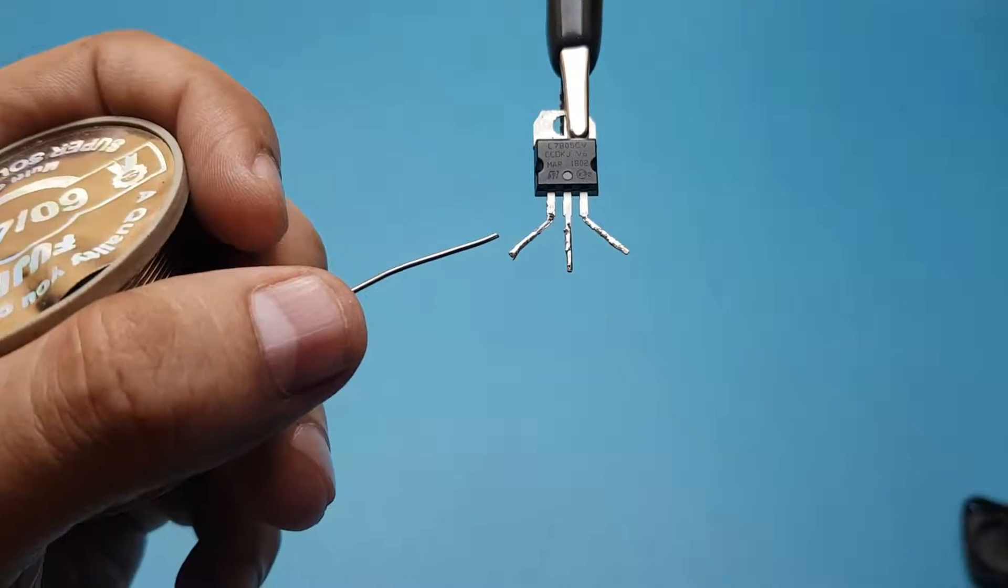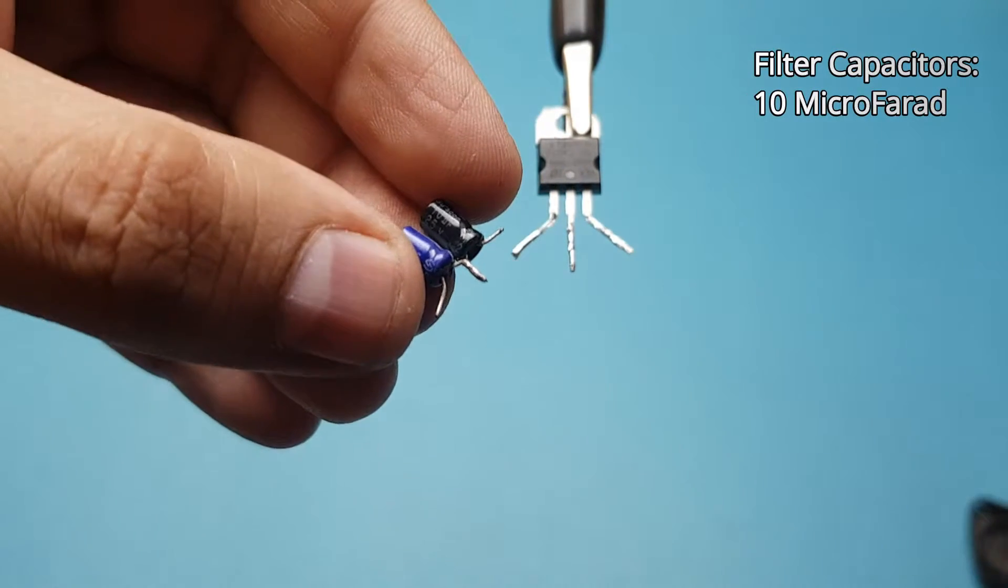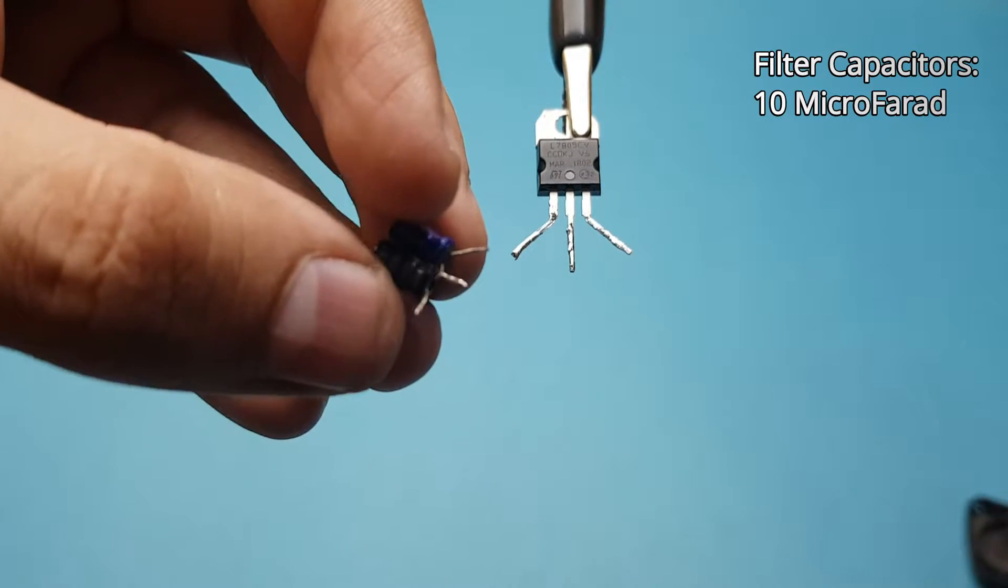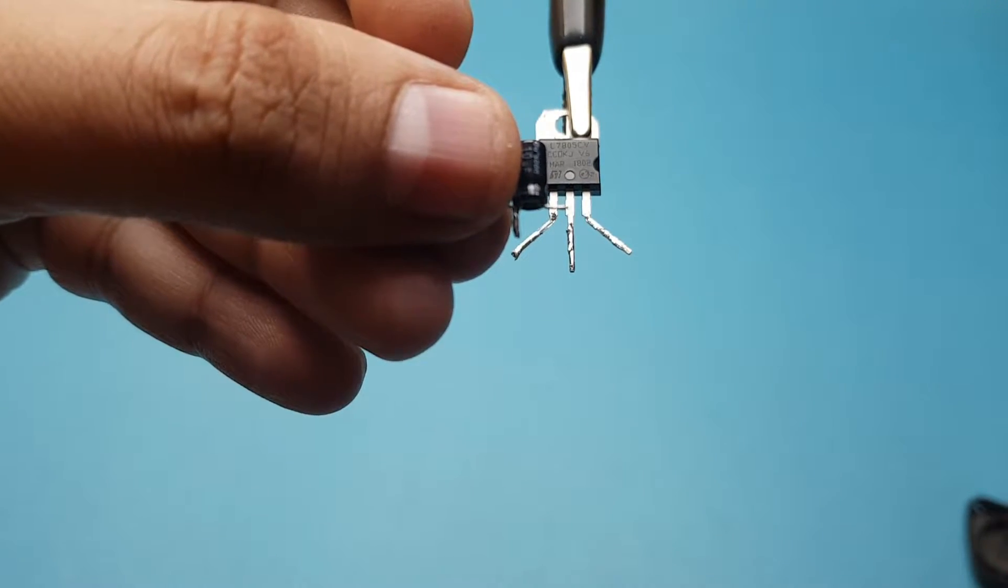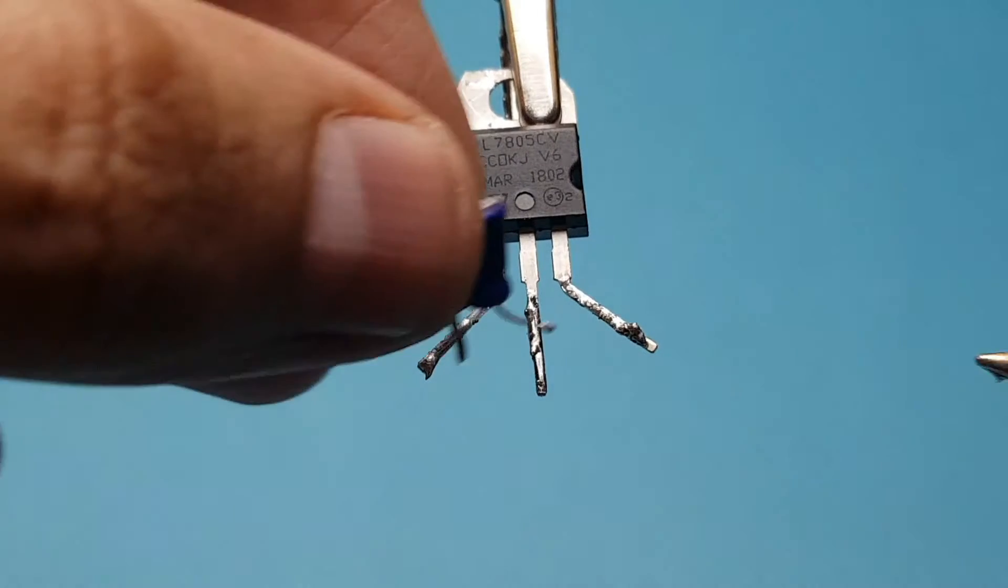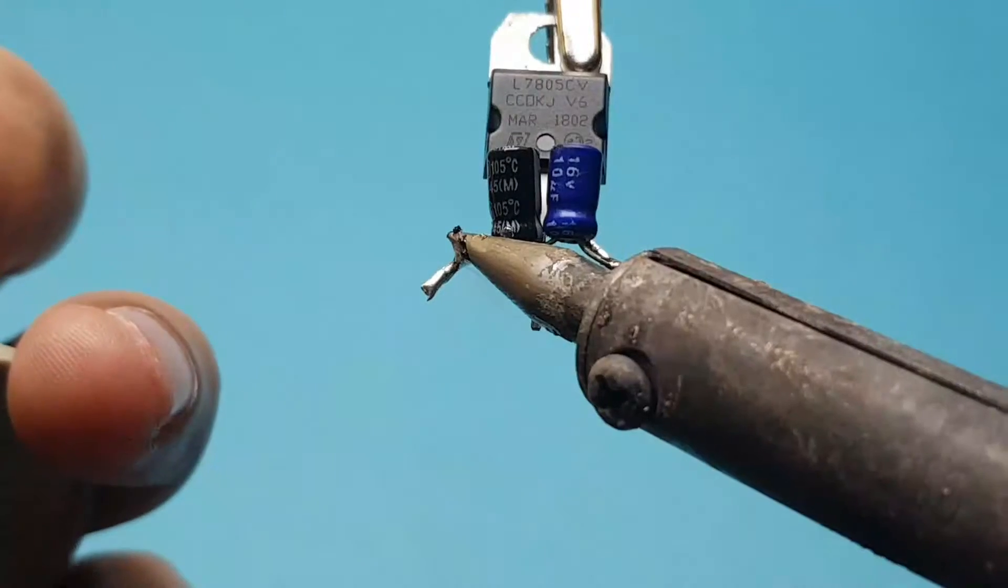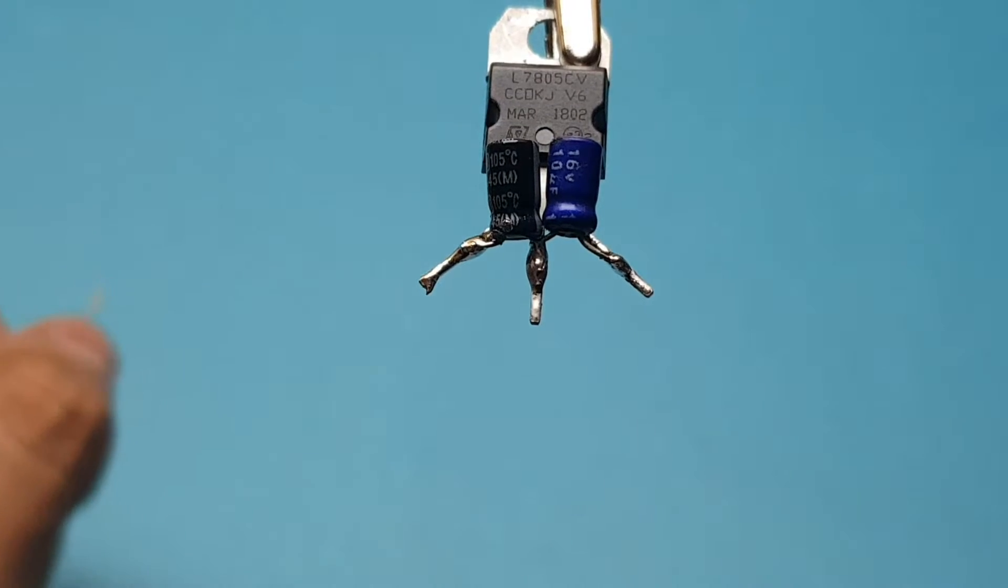It is highly recommended to solder these two filter capacitors directly on the pins of LM7805. Both of these capacitors should be 10 microfarad and should be rated for more volts than your power supply. I am using a 12 volt power supply, so my capacitors are 16 volts.